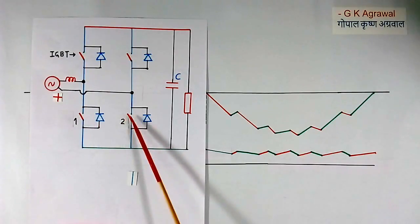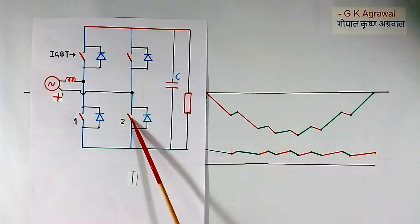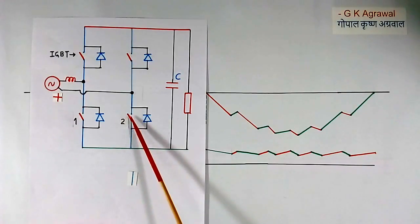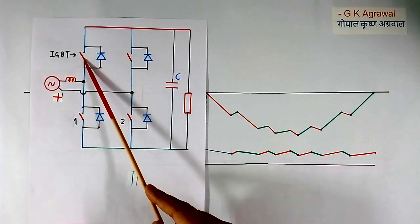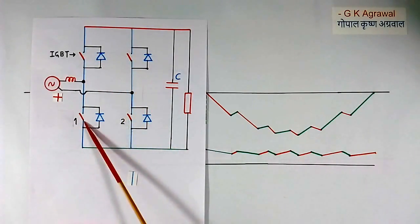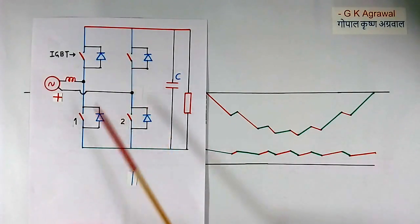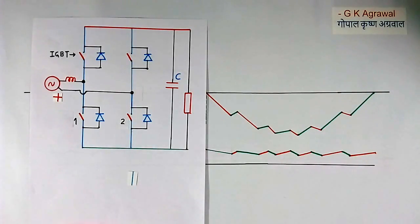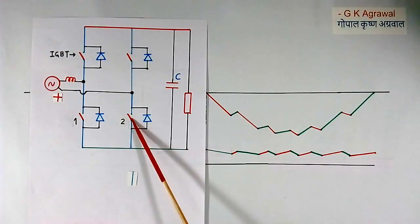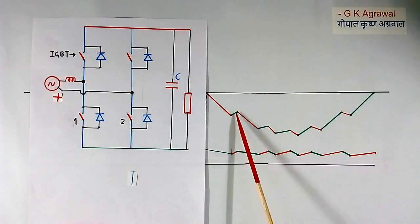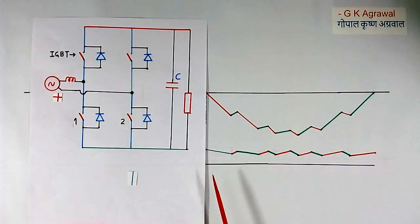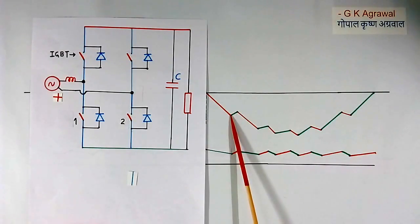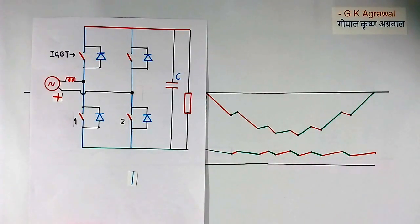So here only 2 IGBTs are sufficient to control the system, but in fact there will be 4 IGBTs. The remaining 2 will either not be used, or sometimes these 2 will be used and sometimes the other 2, or some other combination, such that heating is less. By making this IGBT switch on and off at very high frequency, we can bring this ripple very low. We can select the switching on and off time as we want, so we can shape the current waveform and control the power factor as well.